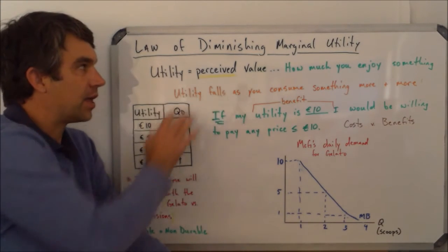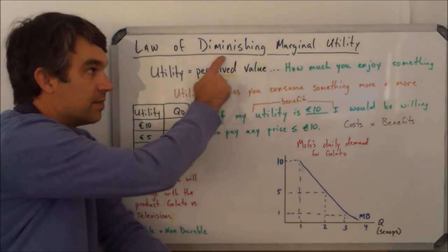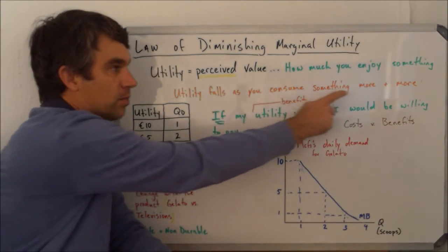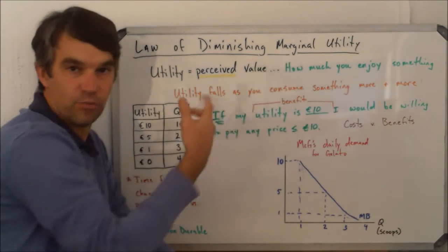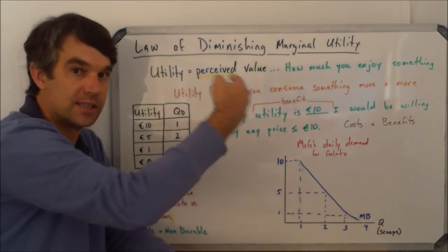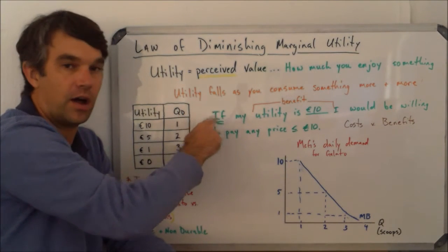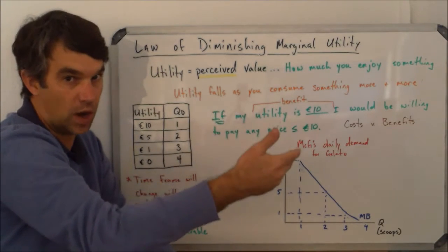What we're going to see with the law of diminishing marginal utility is that utility is going to fall, it's going to diminish as I consume more and more and more, and that's that idea of margins. So as I eat one scoop of gelato and then eat a second scoop of gelato and on and on, we're going to see that the utility is going to fall as I eat each one.